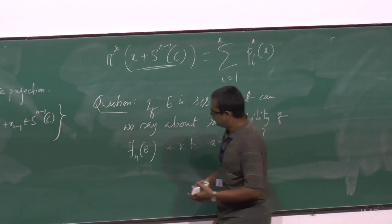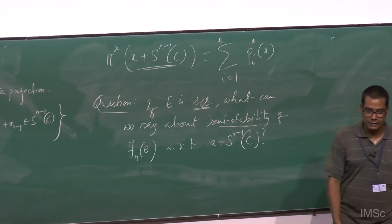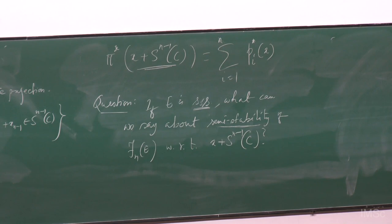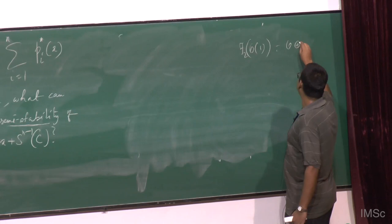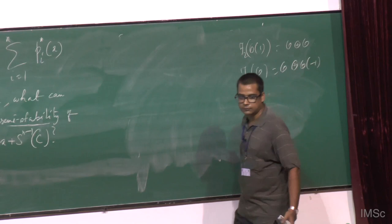Without a semi-stability or stability condition on E, we cannot ensure semi-stability of the second bundle. We already gave examples: F_2(O(1)) gives O ⊕ O over P^2, and F_2(O) gives O ⊕ O(-1). From these one can construct many examples using combinations of line bundles.